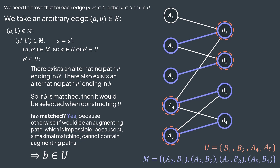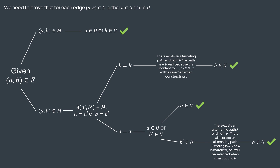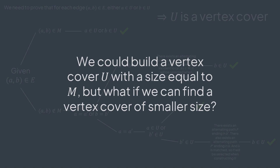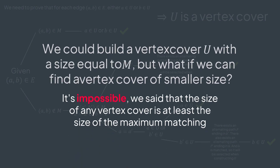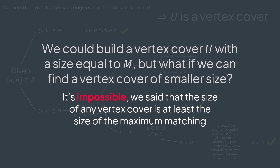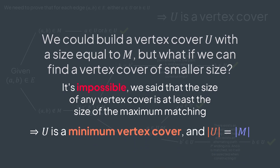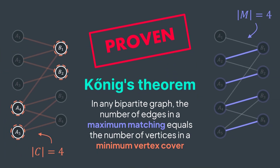We finally proved that in all cases, for any edge (a, b), either a or b will be present in U. Hence U is a vertex cover, and it has a size equal to M. But what if we can find a vertex cover of a size smaller than the size of M? It's impossible. We said at the beginning that there cannot be a vertex cover smaller than the maximum matching. Hence U is a minimum vertex cover, with the same size as the maximum matching M. We proved König's theorem.